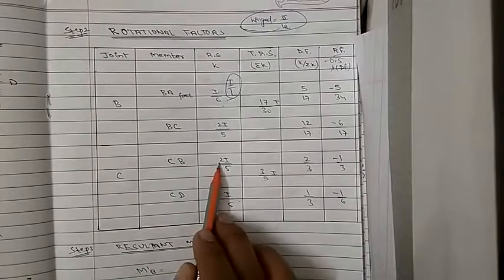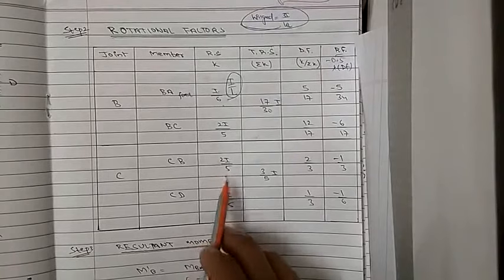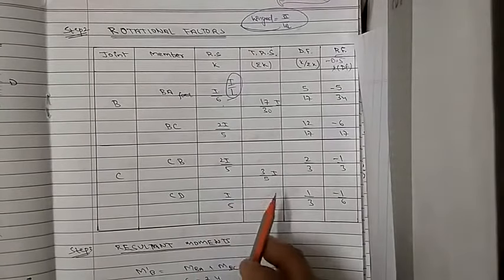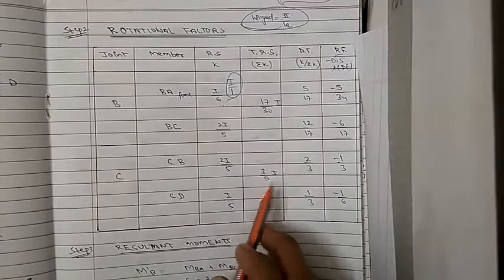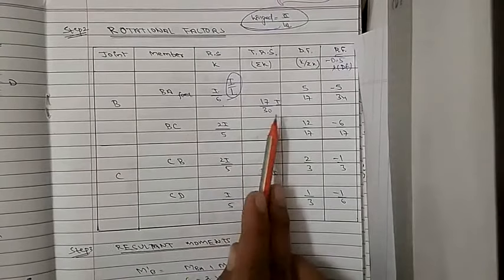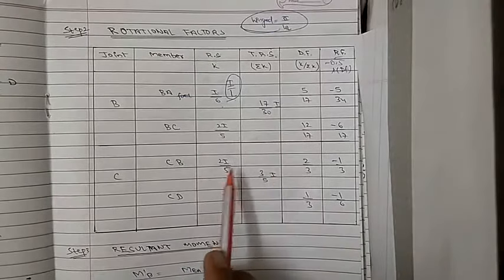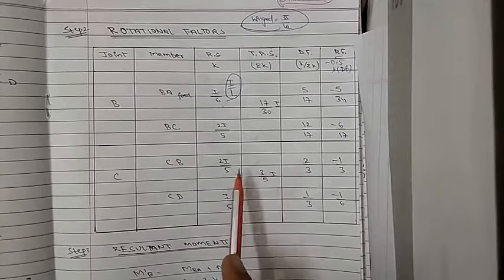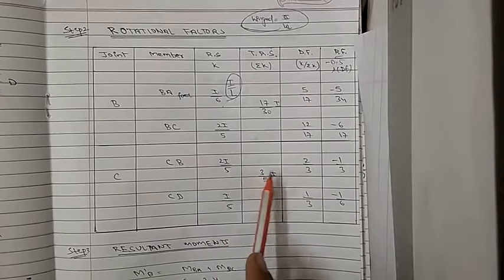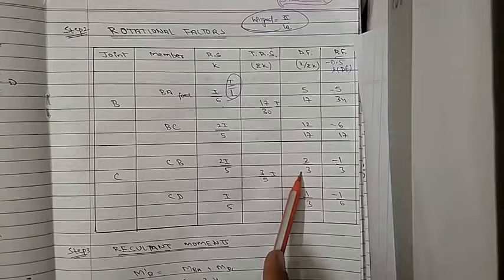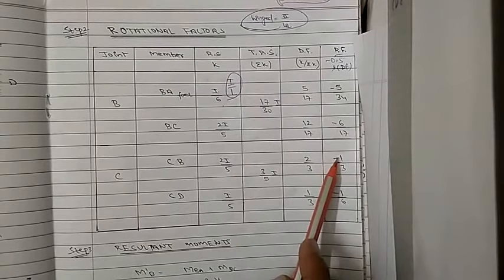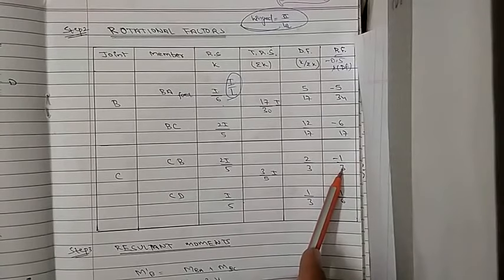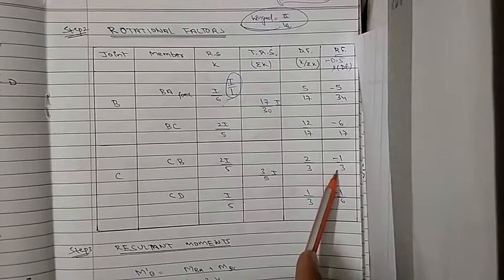For joint C, CB has stiffness 2I/5 and CD has stiffness I/5. Adding both gives the total stiffness. The rotational factors are minus 1/3 for CB and minus 1/6 for CD.